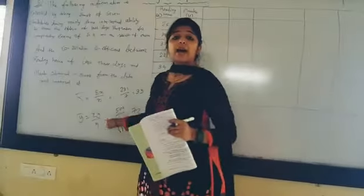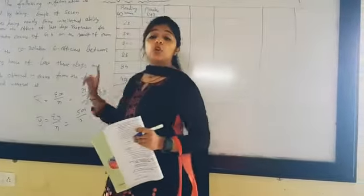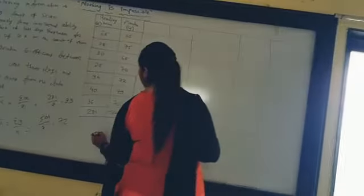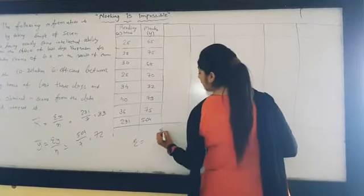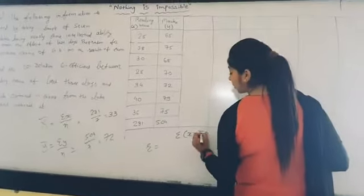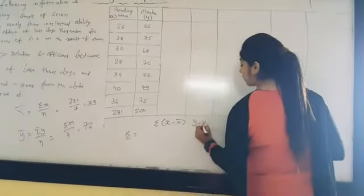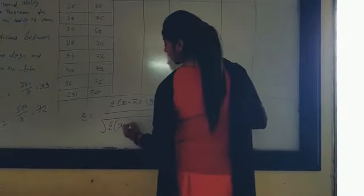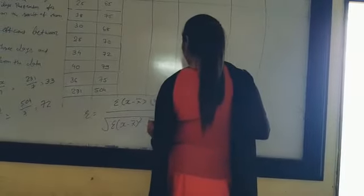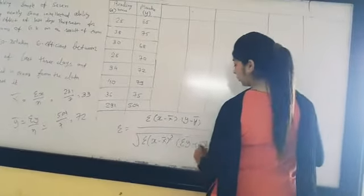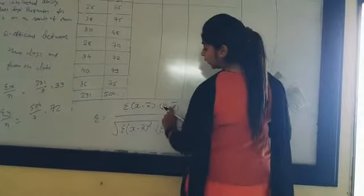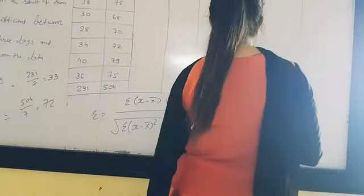Since both x bar and y bar are integers, they are integers, so the formula is sigma x minus x bar into y minus y bar divide by under root sigma x minus x bar square into sigma y minus y bar square.